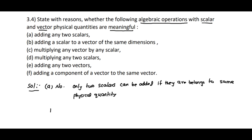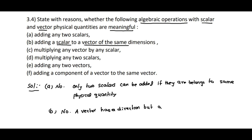Coming to B: adding a scalar to a vector of the same dimensions. It is also not meaningful, because a vector can't be added to a scalar or a scalar can't be added to a vector. Even though they belong to the same dimensions or same physical quantity, a vector has a direction but a scalar has no direction.